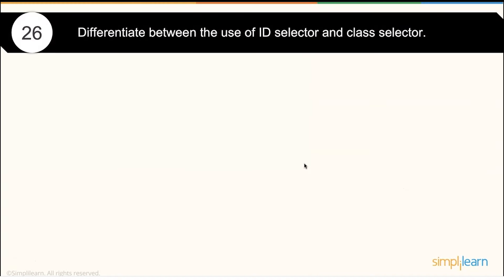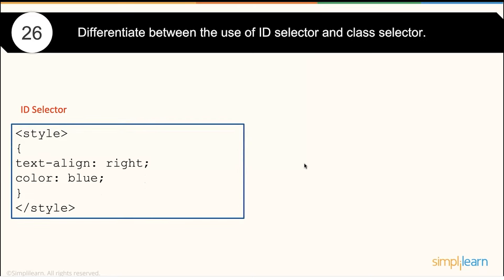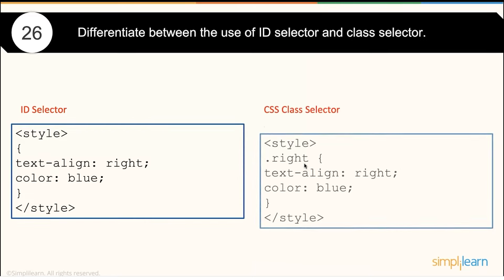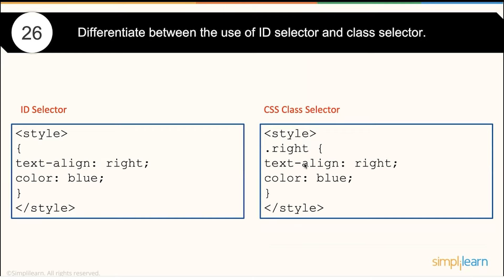What is the difference between using an ID selector and a class selector? The difference in usage comes down to syntax: for an ID selector you use a hash (#), and for a class selector you use a dot (.).